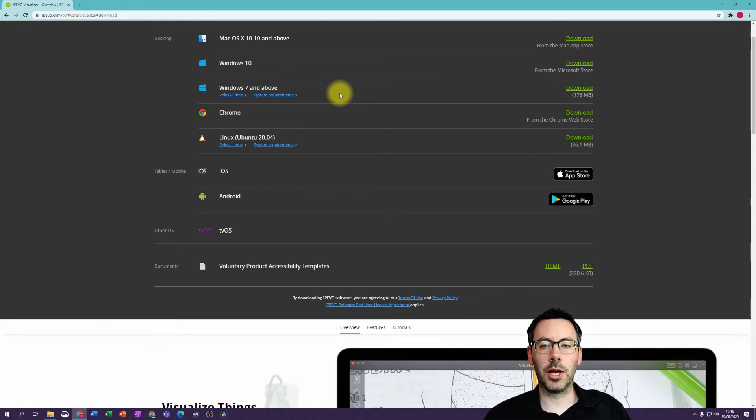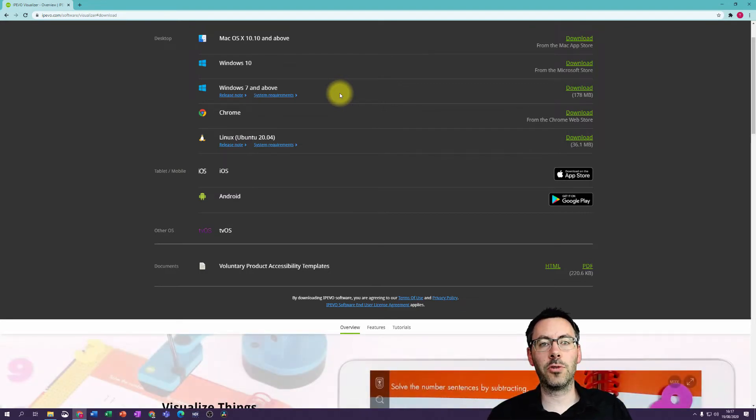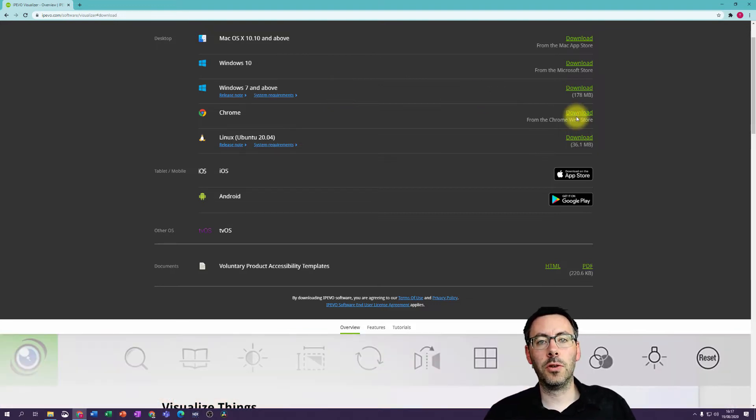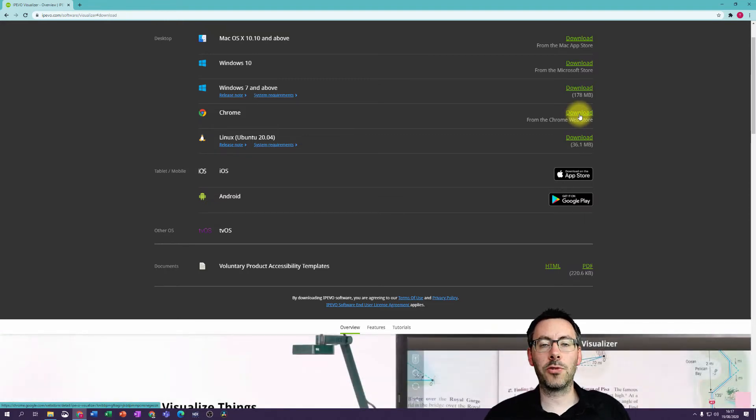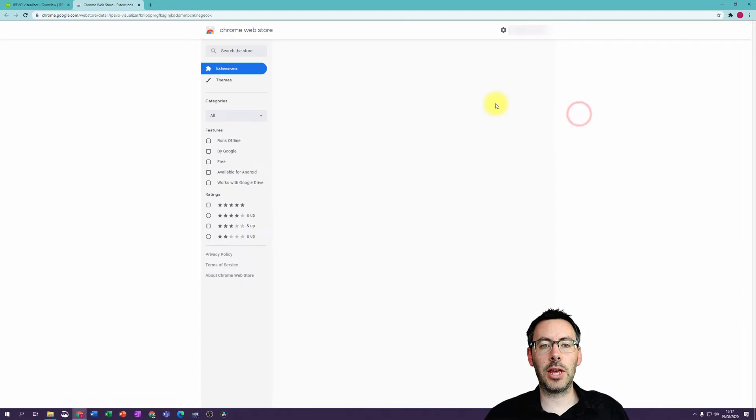If you're not able to install software on your computer, for example if you're in a school and you don't have access to add software, you should still be able to use the Chrome version in your Chrome browser. To use the Chrome version, you need to go via this page. If you go straight to the Chrome App Store, you won't find it. So you go to download here, and that will take you to the Chrome App Store where you can install it.